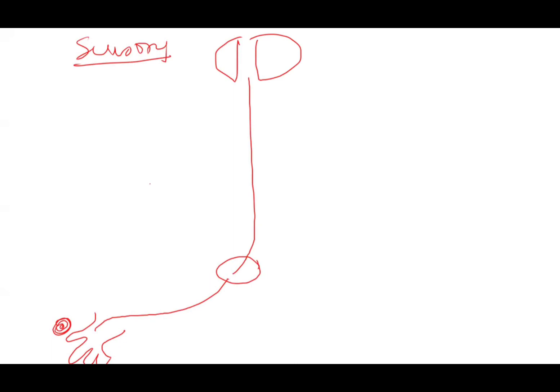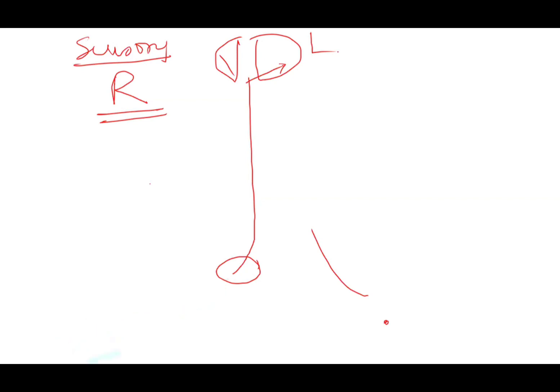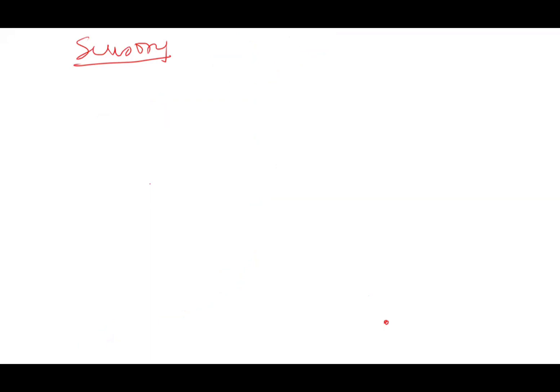Any sensory impulse on the right side is received and perceived by the left brain, and vice versa — any sensation on the left side is perceived by the right side of the brain. For example, if a mosquito bites my left hand, that impulse travels to the spinal cord, goes up, and ultimately reaches the right side of the brain. This means somewhere it is crossing over.